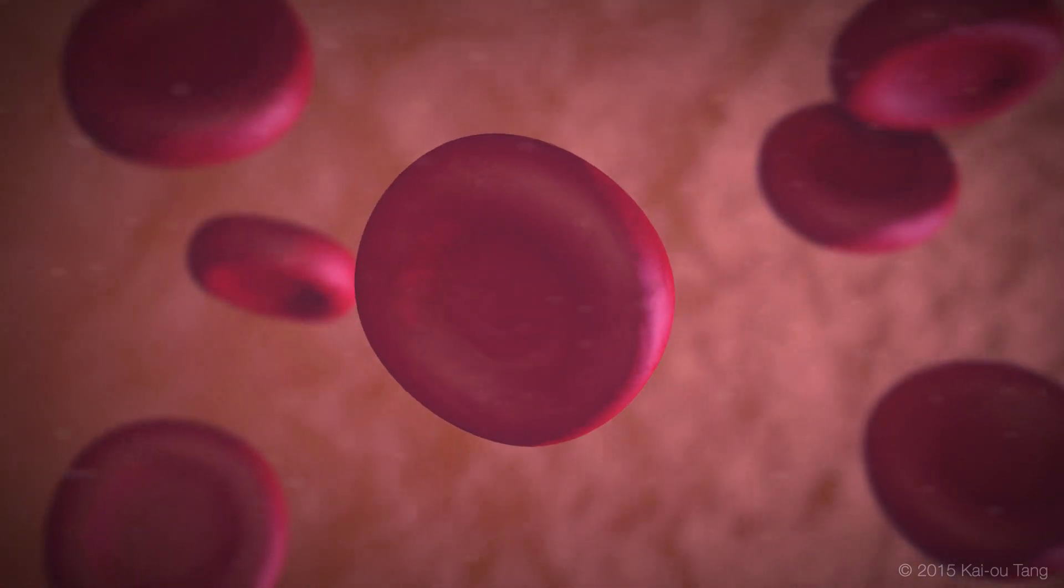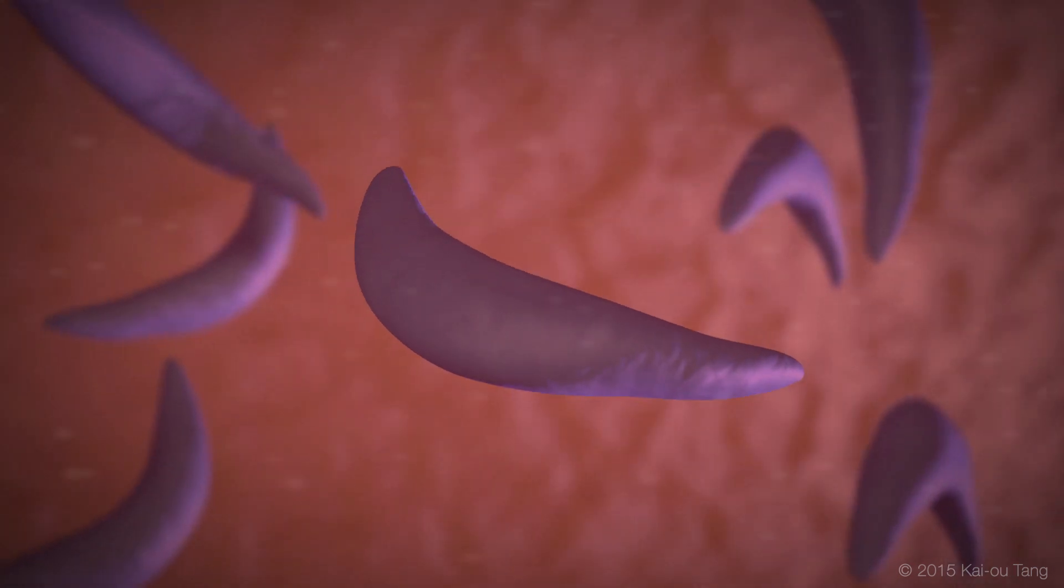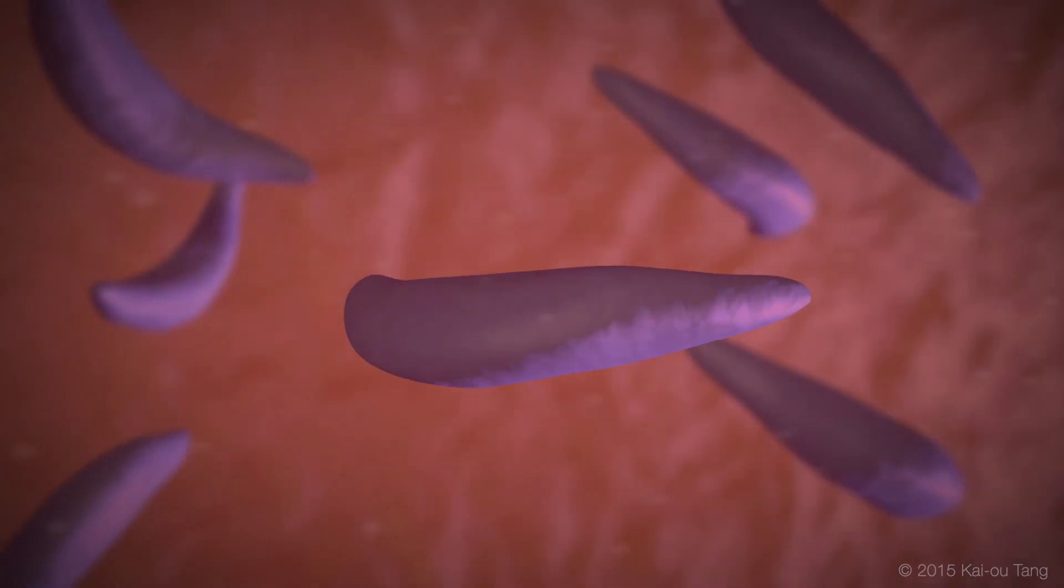These filaments then cluster together, distorting the cell membrane and forming a sickle shape rather than the typical disc structure.